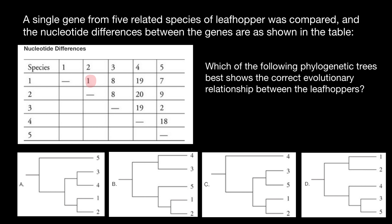We shouldn't exclude any option yet. Let's check the next pair with minimal mutations: species three and five, with only two mutations — almost as close as species one and two. Now checking the phylogenetic trees: on one tree, species three and five are far away, so that's wrong immediately. On tree B, species three and five are also far apart, so tree B is also wrong and we can cross it out.